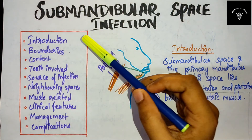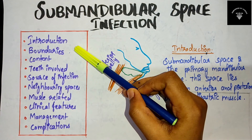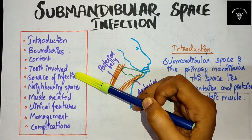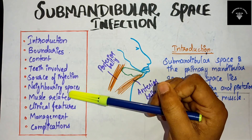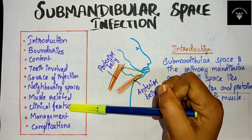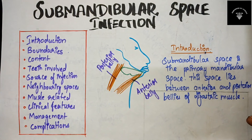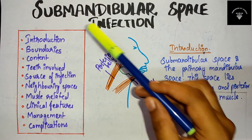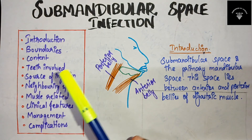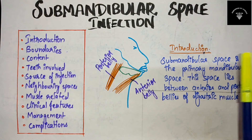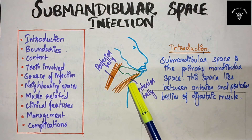We have discussed introduction, boundaries, content, teeth involved, source of infection, neighboring spaces, muscle related, clinical features, management, and complications of submandibular space infection. With this framework you can explain the whole topic. The most important thing to keep in mind is the boundaries — if you remember the diagram, it is easy to remember them all.